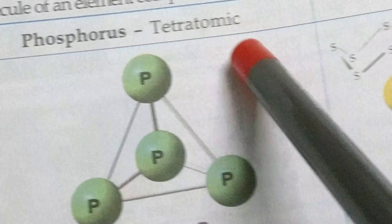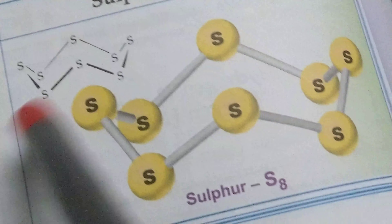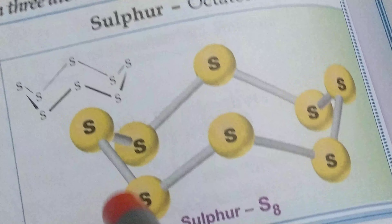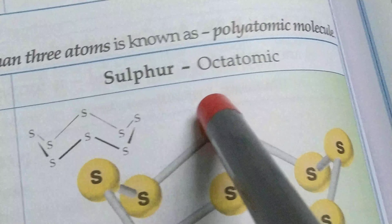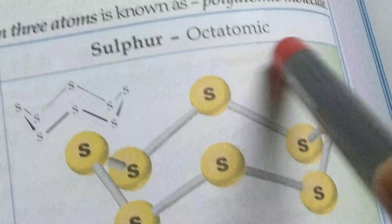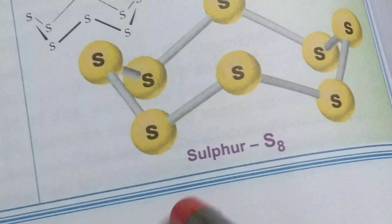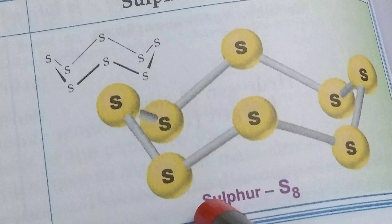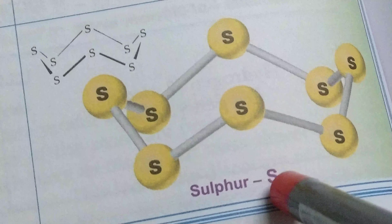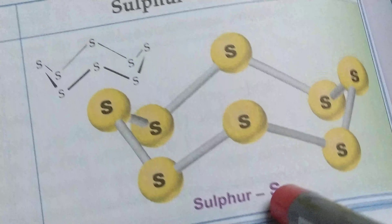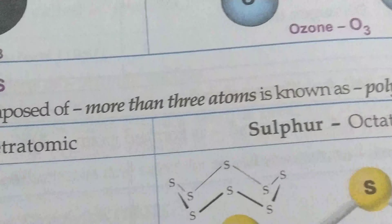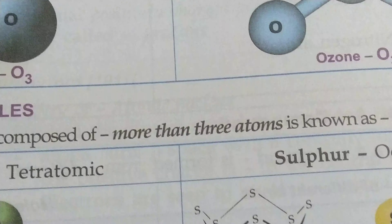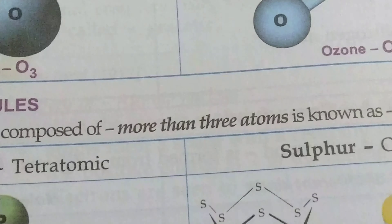Examples of polyatomic molecules: phosphorus — they are tetraatomic molecules, whereas sulfur — they are octaatomic molecules, meaning the number of atoms is eight. So more than three atoms, they are also known as polyatomic molecules.